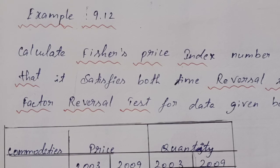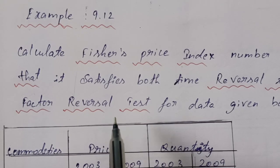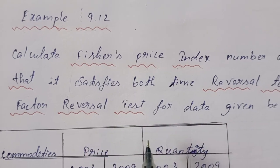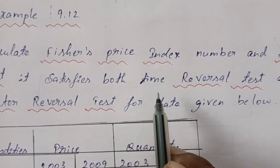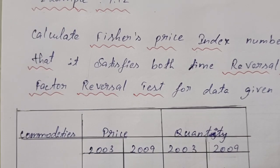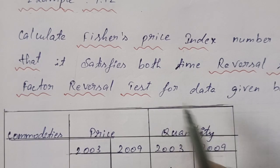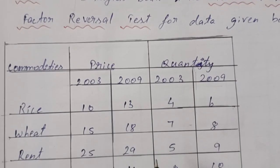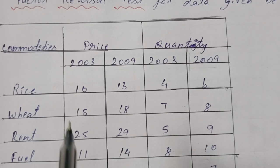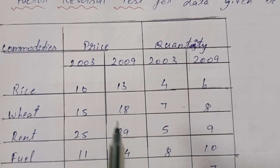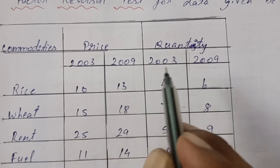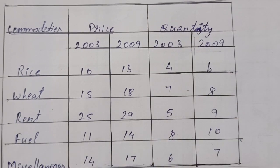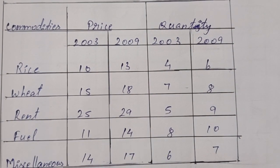Example 9.12. The given question is to calculate the Fisher Price Index Number and show that it satisfies both the Time Reversal Test and the Factor Reversal Test for the given data. We have commodities with Price and Quantities for 2003 and 2009.